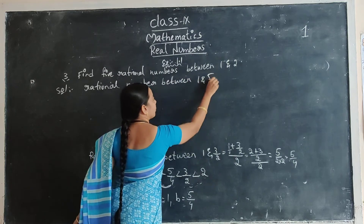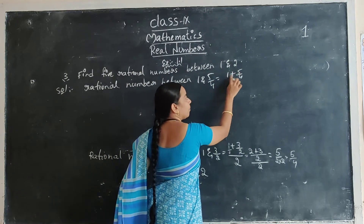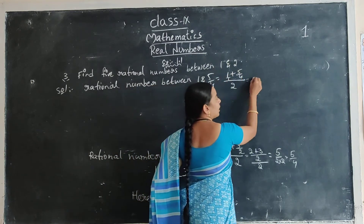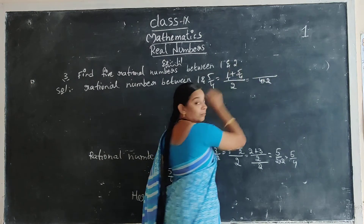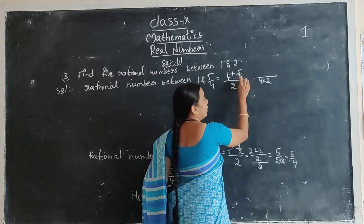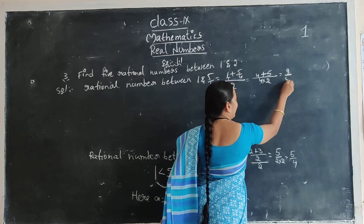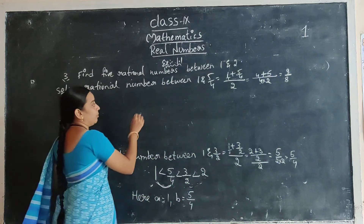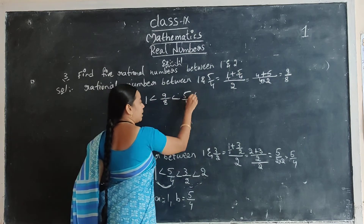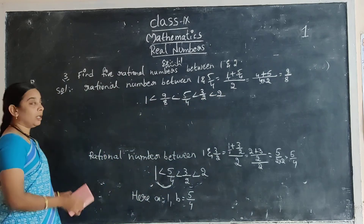1 and 5 by 4 — this is A value and this is B value. That means 1 plus 5 by 4, A plus B by 2. A denominator is 1. 1 and 4, LCM is 4. This 2 is also denominator. 4 ones are 4, 1 fives are 5. Add both: 9. 2 fours are 8. You got one more number: 9 by 8. That means 1 less than 9 by 8 less than 5 by 4 less than 3 by 2 less than 2. In between 1 and 2, how many did you get? 3 numbers.